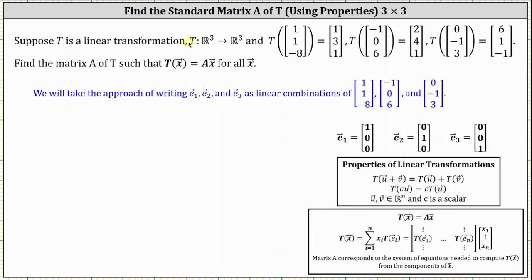Suppose T is a linear transformation from R3 to R3, and we are given the following three transformations. We're asked to find matrix A of T, which is the standard matrix or transformation matrix, such that T of x equals Ax for all x.